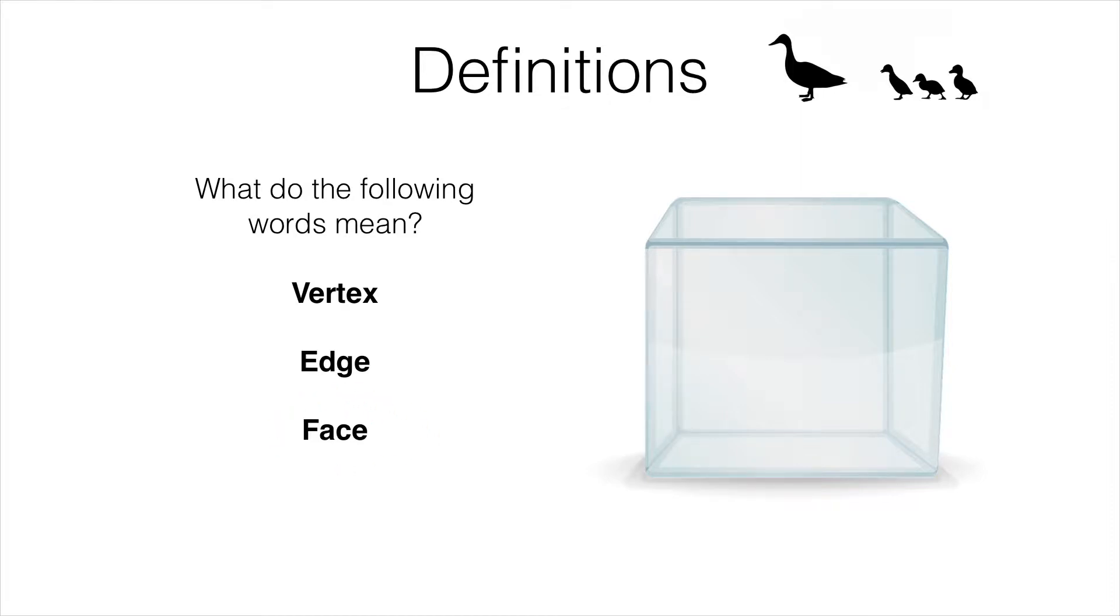A face is simply a two-dimensional shape that forms part of the boundary of a 3D object. For example, we have a cube here and this cube is contained within six square faces.